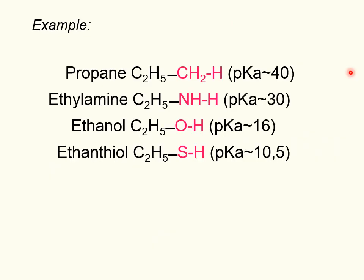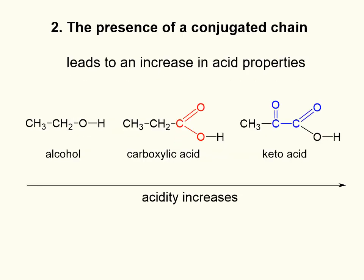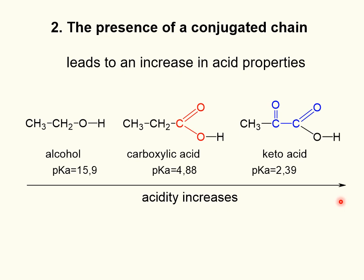Look at these examples — acidity indicated by pKa decreases, and the strength of acids increases. The presence of a conjugated chain leads to an increase in acid properties. Alcohol doesn't have a conjugated chain. Carboxylic acid has one conjugated chain. Keto acid has two conjugated chains. Acidity increases in this series and pKa decreases.